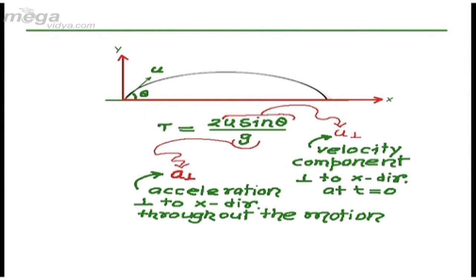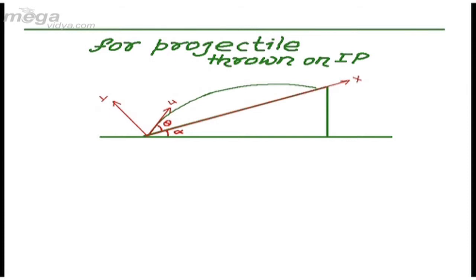So by using these terms, I can write time of flight to be equal to twice u perpendicular upon a perpendicular, which is the desired result which I want to share with you.